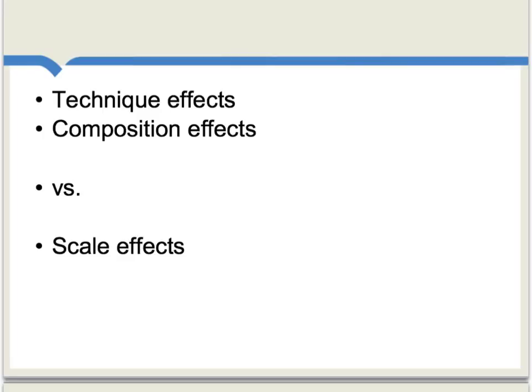Some discussions of trade and the environment split the problem into technique effects and composition effects, which tend to make countries cleaner, versus scale effects. Technique effects mean you have access to cleaner technologies of production. Composition effects mean that you want cleaner outputs. Scale effects mean that by producing more, you may be creating more pollution.